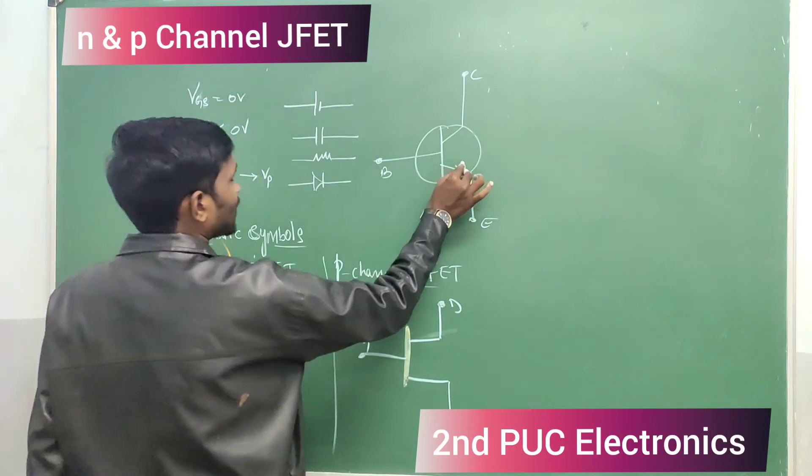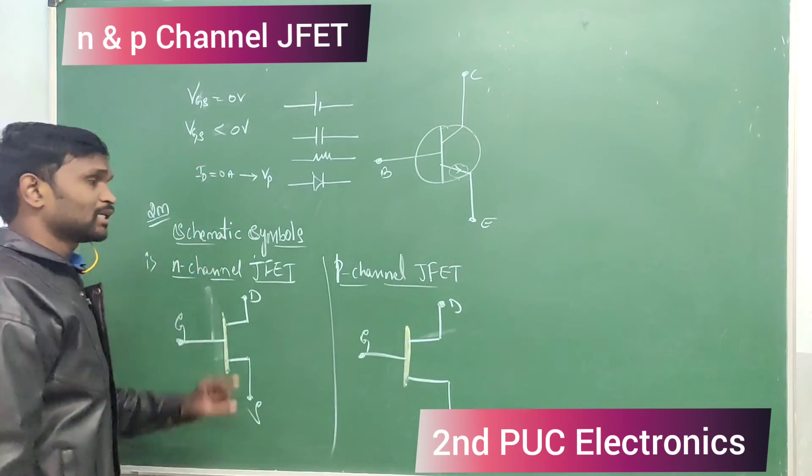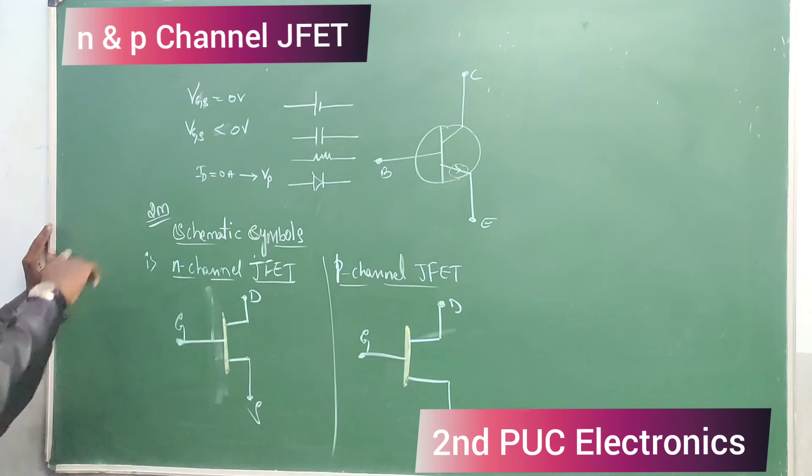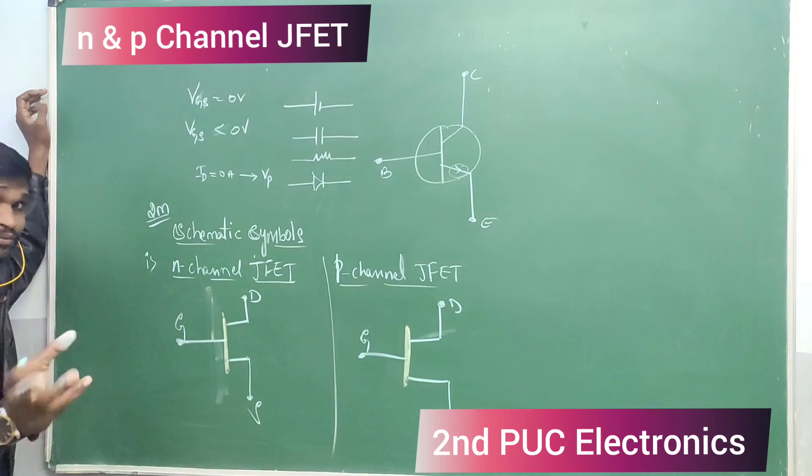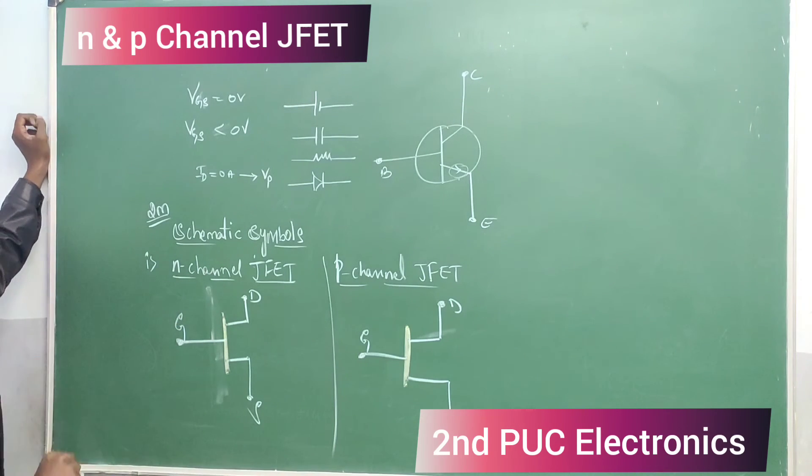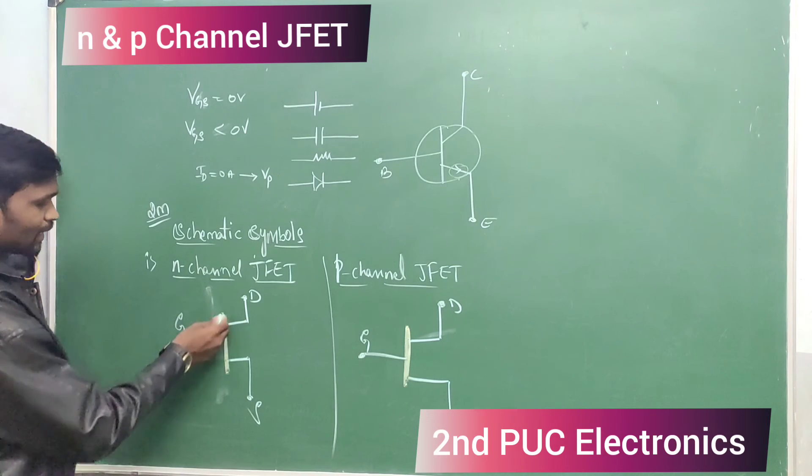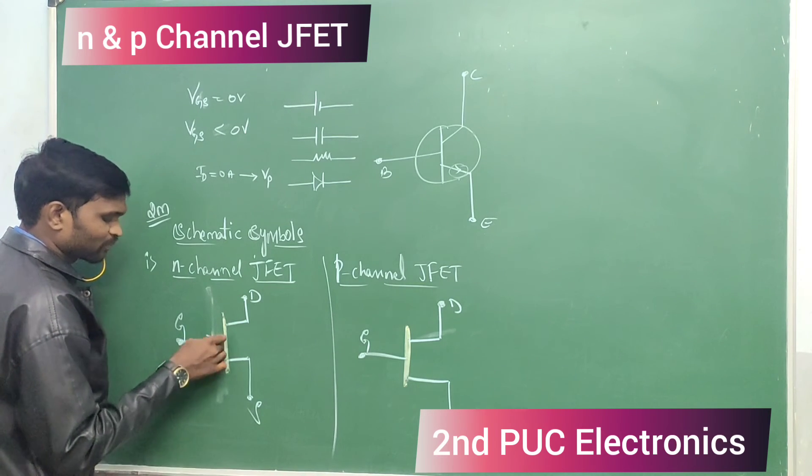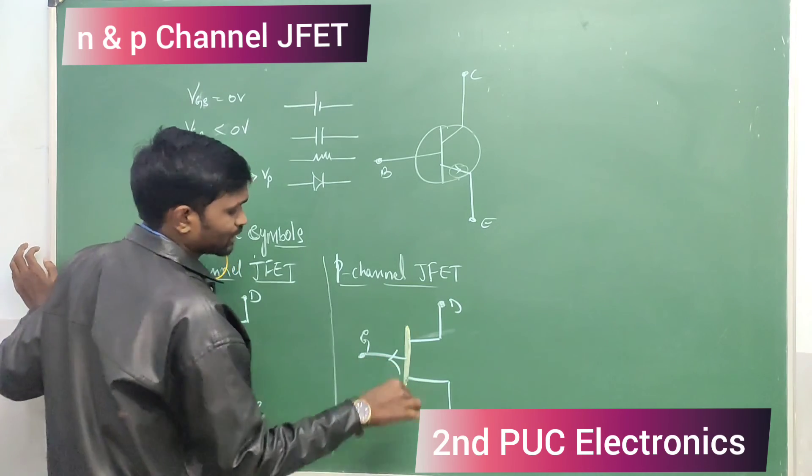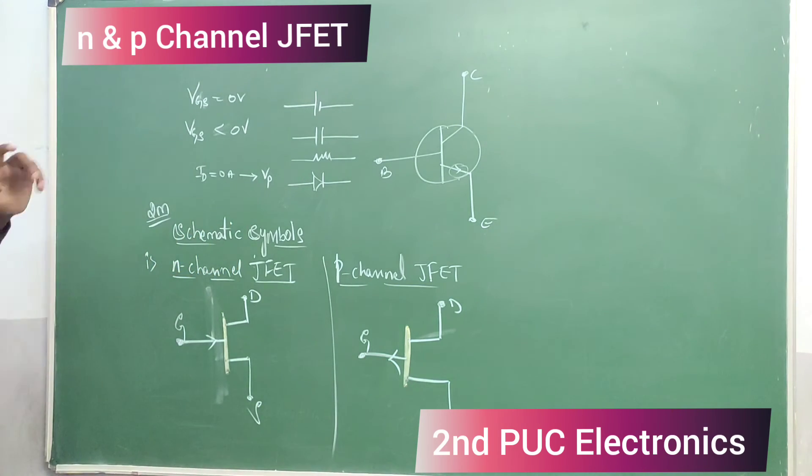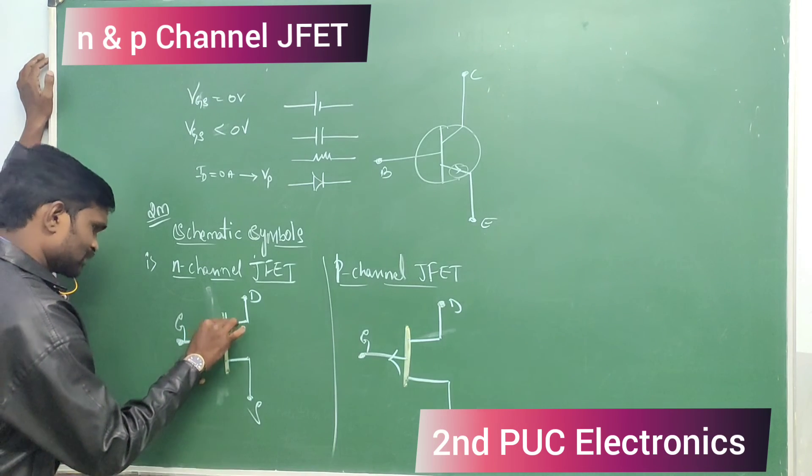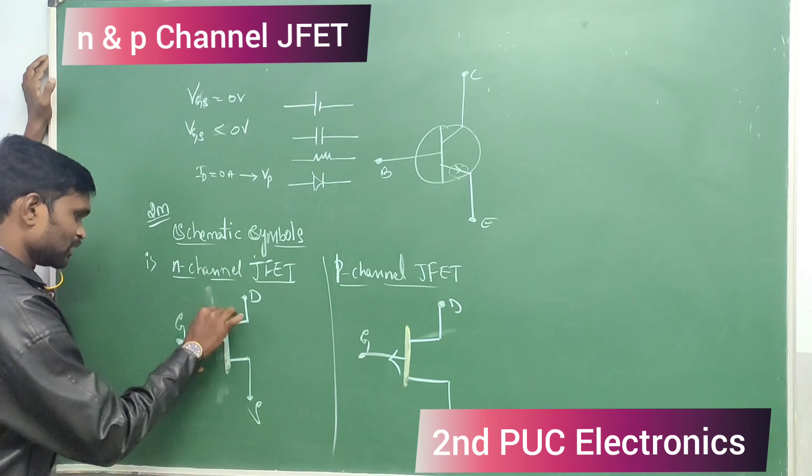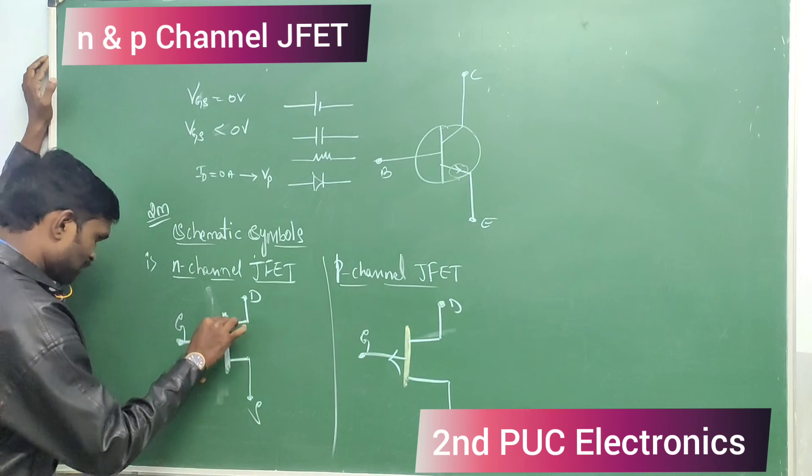Basic difference: in transistor, based on this arrow mark, current from base to emitter or emitter to base, we will define NPN and PNP. In the same way, N-channel JFET current is going in, P-channel is going out. This is the difference. So symbols are important. Exam question: draw the schematic symbols of N-channel and P-channel JFETs.